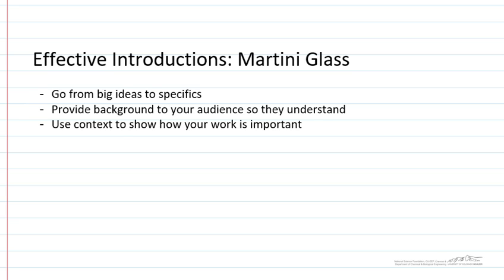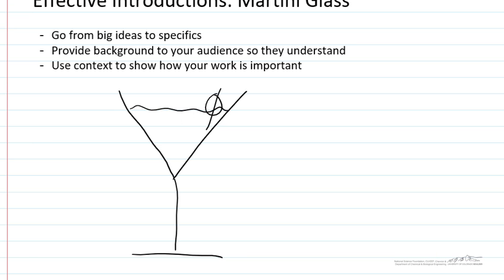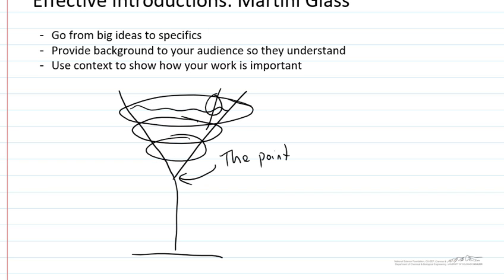So the reason we call this the Martini Glass Framework is because of the shape of a martini glass. What we're aiming to do is provide as much wide information as we can up front and then get narrower and narrower until we get to the point of our work in particular. The idea being that if we went straight to the point no one would understand what we're talking about or why.